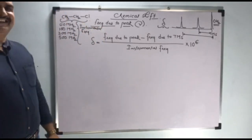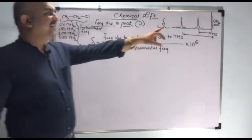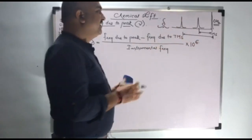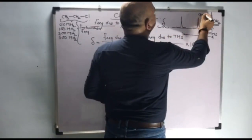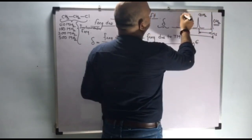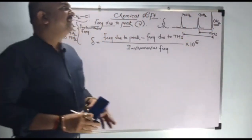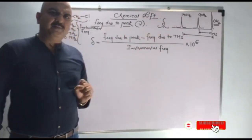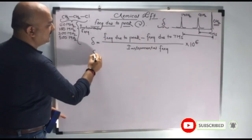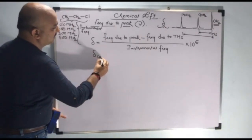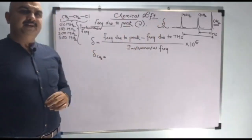Consider when we have taken NMR spectra of this compound, we will get such a type of result. In this, consider one peak is appearing at 90 hertz and another is appearing at 140 hertz. This is the frequency we can get from the instrument. How are we going to find out the chemical shift? Chemical shift is the separation of a particular peak from the TMS peak.